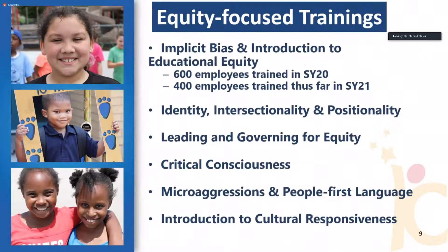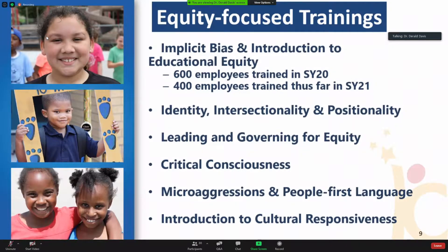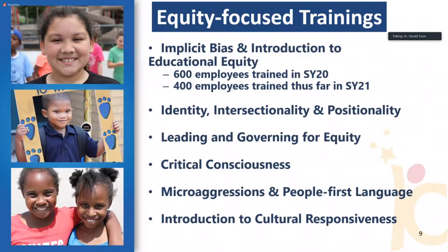The first item is implicit bias training. Last year we trained over 600 employees, and already this summer we've trained 400 employees. We anticipate additional employees will sign up, and there has been a lot of positive feedback. You can see the other trainings listed that our employees will have access to. I want to call your attention to the middle bullet — that one specifically is for the board — for leading and governing for equity, while the others are available to our employees.